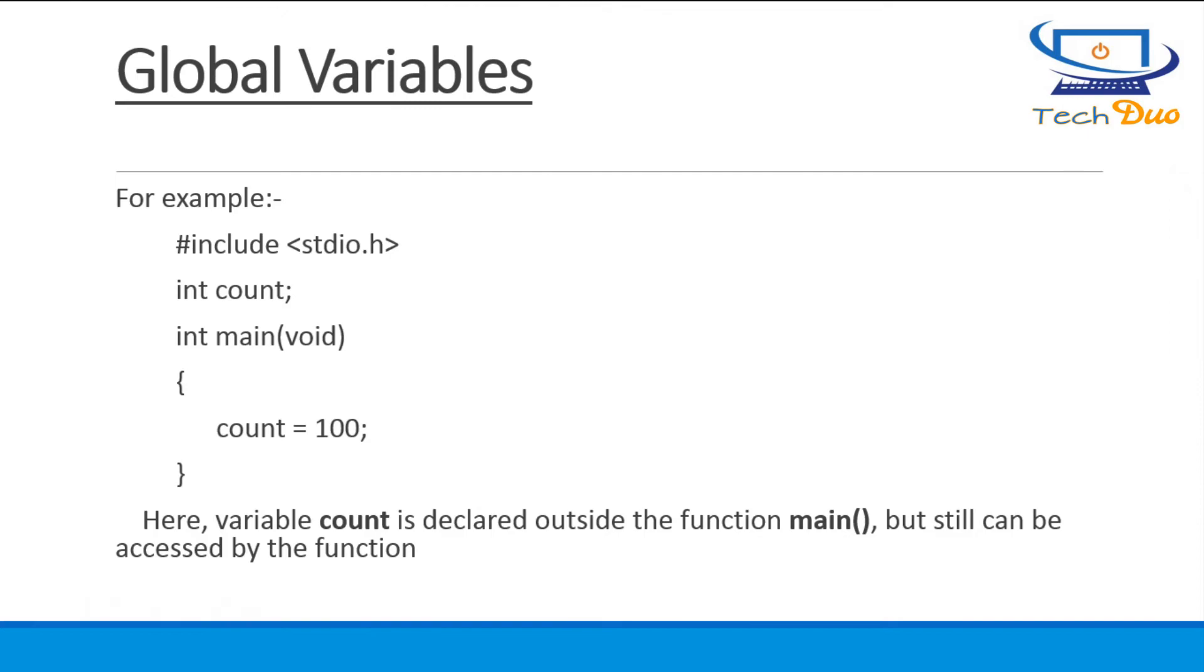For example. Here, variable count is declared outside the function main, but still can be accessed by the function.